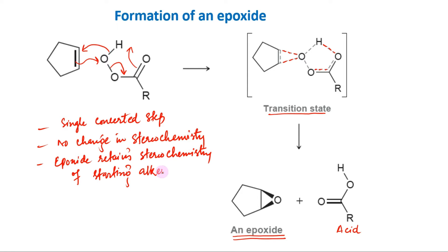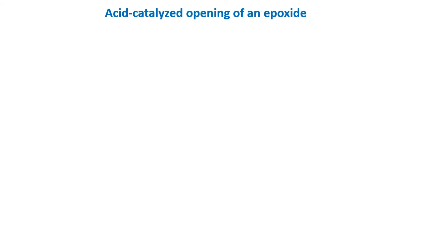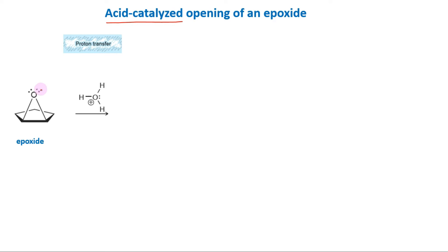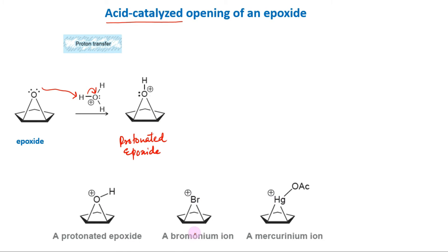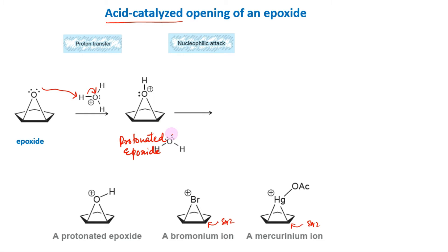Once the epoxide has been formed, it can then be opened with water under either acid-catalyzed or base-catalyzed conditions. For now, we will explore only the acid-catalyzed opening of epoxides. Under these conditions, the epoxide is first protonated to produce an intermediate that is very similar to a bromonium or mercurinium ion. All three cases involve a three-membered ring bearing a positive charge. We have seen that bromonium and mercurinium ions can be attacked by water from the backside. In much the same way, a protonated epoxide can also be attacked by water from the backside.